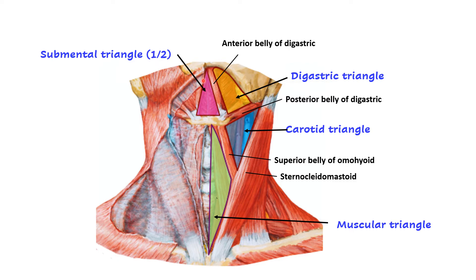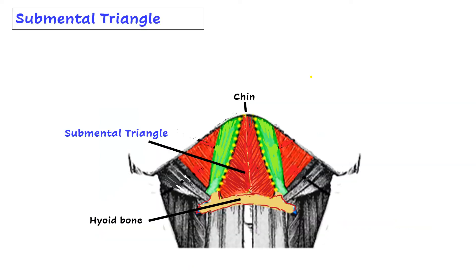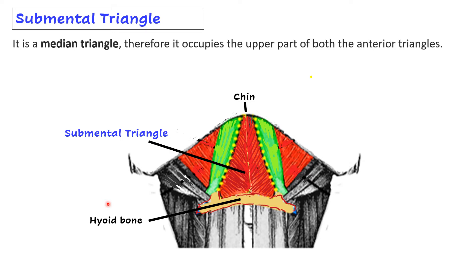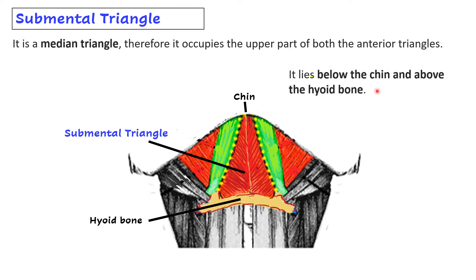In the anterior view, we can see the muscular triangle, the carotid triangle with the carotid arteries, the digastric triangle, and the submental triangle. The submental triangle occupies the median region, with half present on either side. It is a median triangle, occupying the upper part of both anterior triangles, lying below the chin and above the hyoid bone.